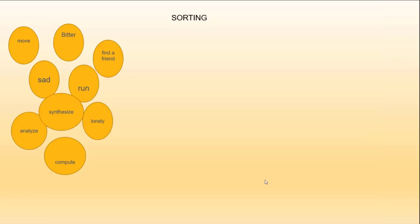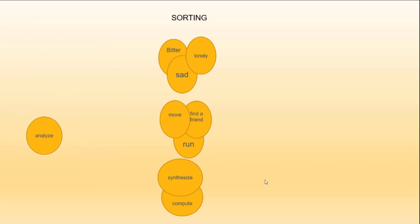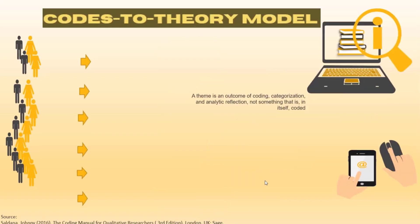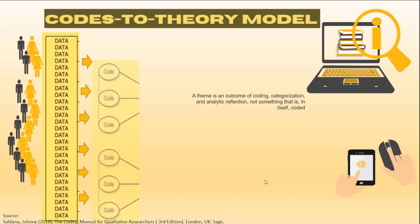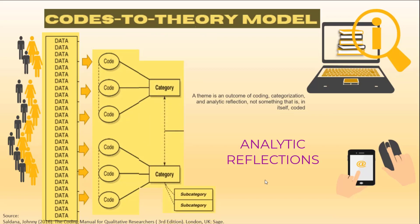After transcribing, we immediately do the coding process. Then we sort them and identify the specific category each belongs to. Finally, we identify a theme. Take note that a theme must be an outcome of coding, categorization, and analytic reflections — and not something that is in itself coded.